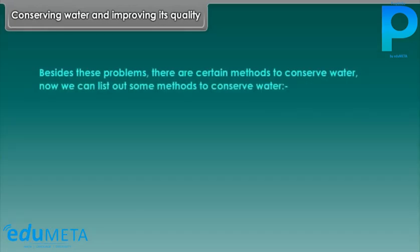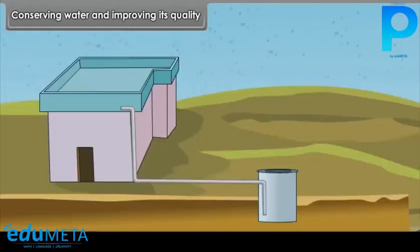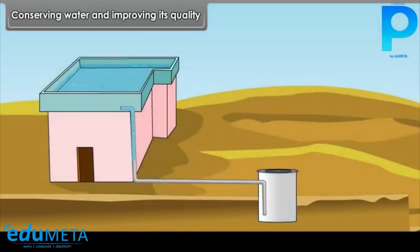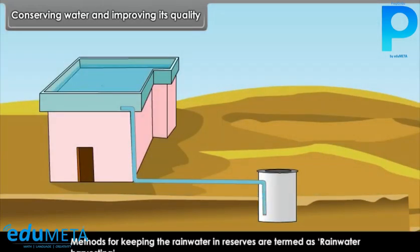Iron contamination and hard water are more serious problems for industrial activities and electricity generation. Besides these problems, there are certain methods to conserve water. We can list out some methods to conserve water. Rain water harvesting: methods for keeping the rain water in reserves are termed as rain water harvesting.